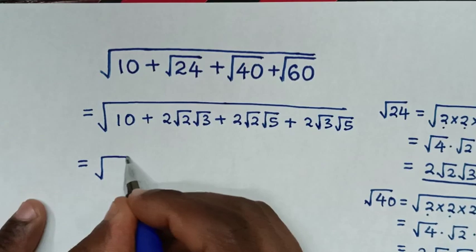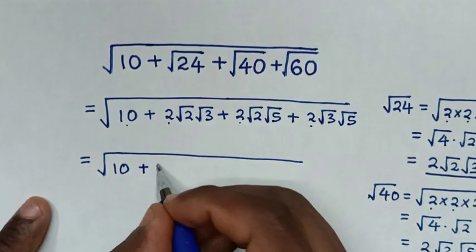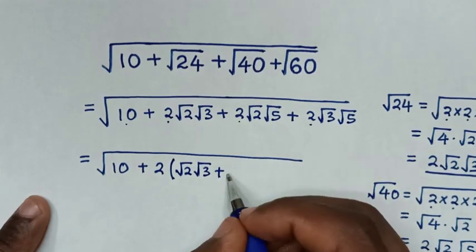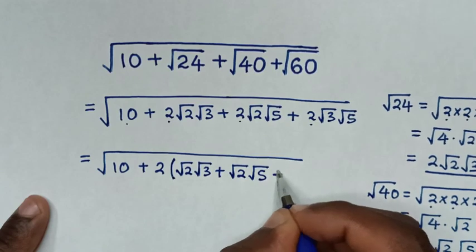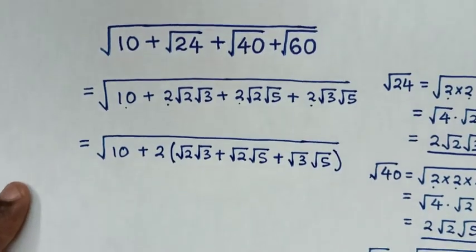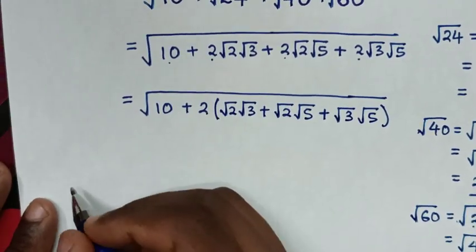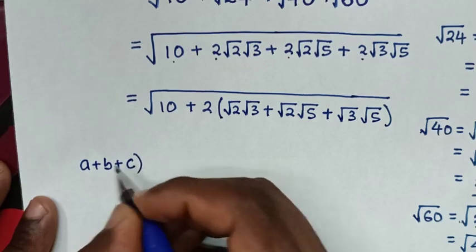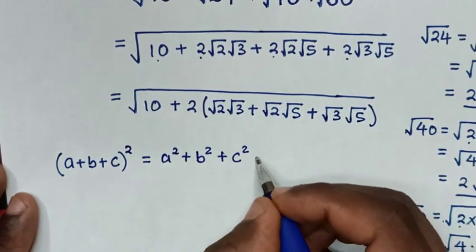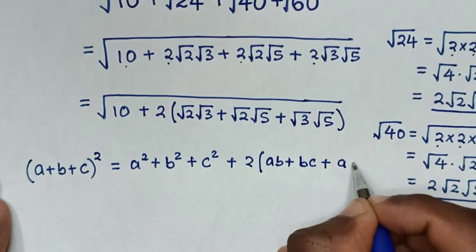From here it will be equal to square root of 10, then plus — since 2 is common, we take 2 out of the bracket — then it will be square root of 2·square root of 3, plus square root of 2·square root of 5, plus square root of 3·square root of 5, all in bracket. In the next step, we apply the algebraic rule: (a + b + c)² = a² + b² + c² + 2(ab + bc + ac).